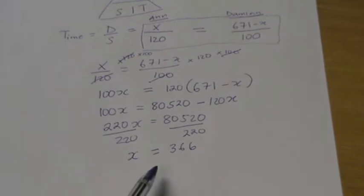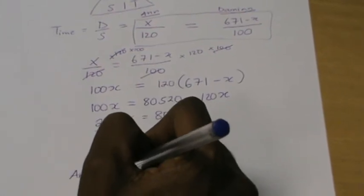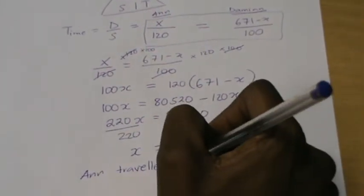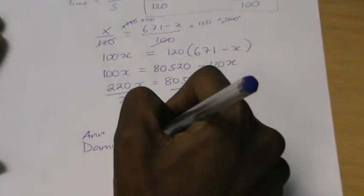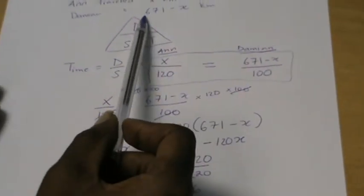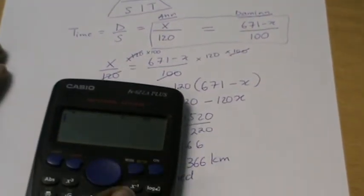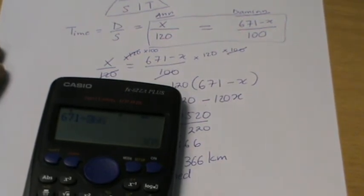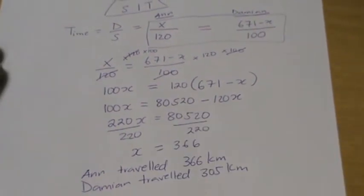So x equals 366 — that is the distance traveled by Ann. We can say Ann traveled 366 kilometers. For Damian, from our equation his distance is 671 minus x, so 671 minus 366 equals 305 kilometers. So Damian traveled 305 kilometers. That's the first part of the question answered.